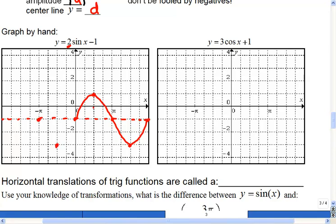So amplitude 2, amplitude 2, here's our graph. So I'm going to let you try the next graph, 3 cos x plus 1.